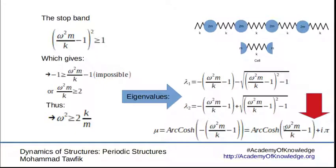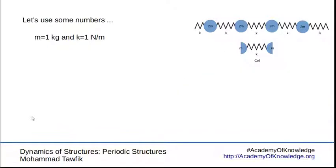So now we have both stop band and pass band. The stop band will extend for all values of omega squared greater than two k over m. And the pass band is for all the values of omega squared that are less than two k over m and greater than zero.